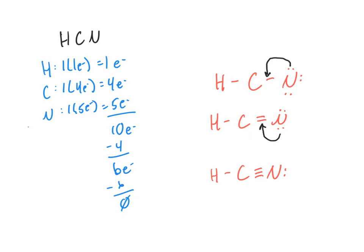This gives us a triple bond between carbon and nitrogen, with one lone pair remaining on nitrogen. We've now used all of our electrons. Hydrogen has its two-electron octet, carbon now has 8 electrons around it, and nitrogen has 8 electrons around it. This is a valid Lewis structure for HCN.